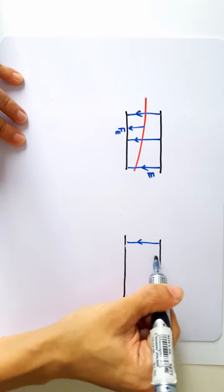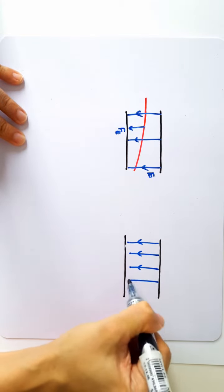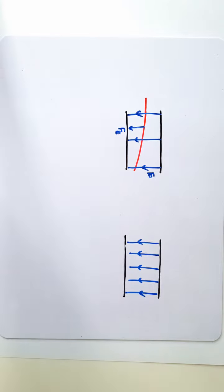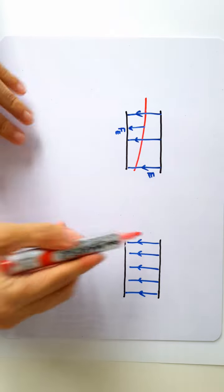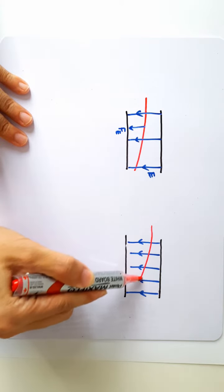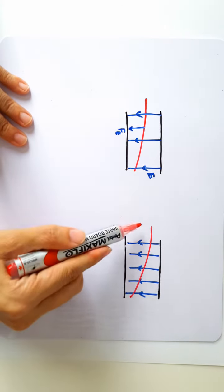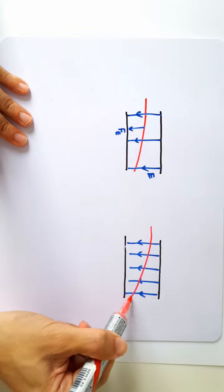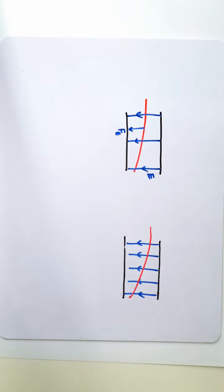If we make the field stronger between the plates, then the charged particle when it goes through the parallel plates will still follow a parabolic path, but it will be a more curvy parabolic path simply because of the larger electric field strength.